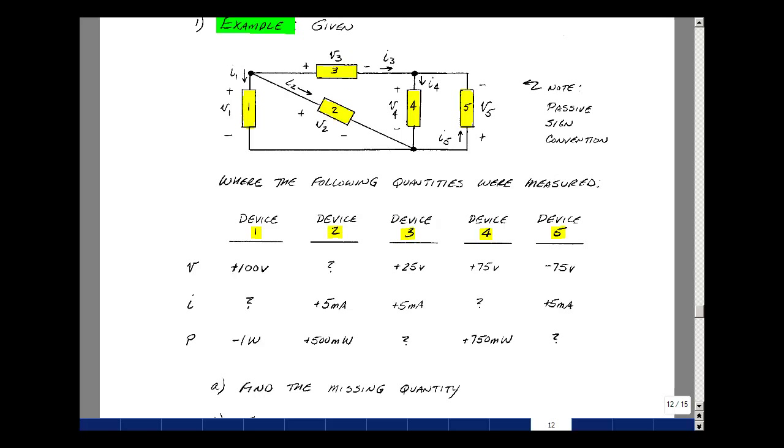All right, for device number one, I know the voltage and the power. Now the product of voltage and current is power, so I could then solve for current by taking power and dividing by voltage. That would give me minus one divided by a hundred, and that turns out to be minus 10 milliamps.